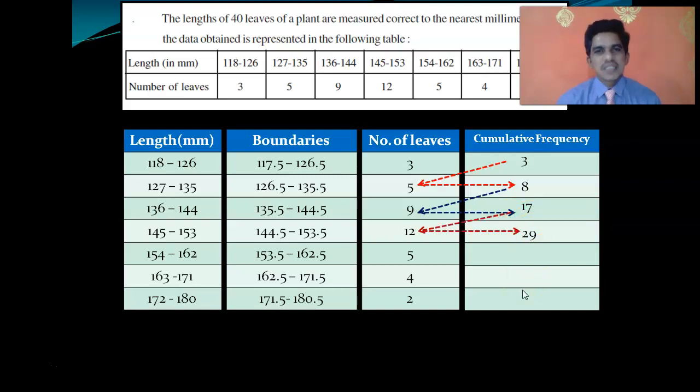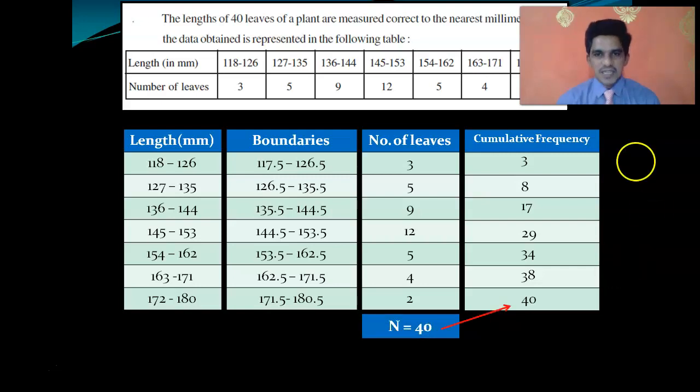Third class cumulative is 8 plus 9 equals 17. Fourth class cumulative frequency is 17 plus 12 equals 29. Next 29 plus 5 equals 34, 34 plus 4 equals 38, and 38 plus 2 finally equals 40. The final cumulative frequency value equals N, which is how you can check.